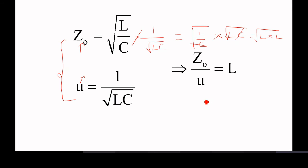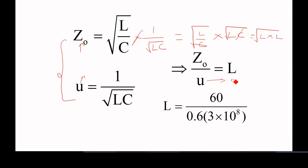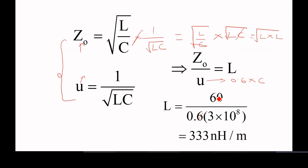Z₀ is given as 60 ohms and U is given as 0.6 into c, where c is 3 into 10 to the power of 8. If we substitute and simplify, we will get 333 nanohenry per meter.